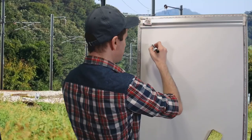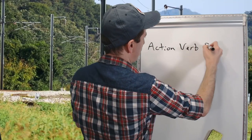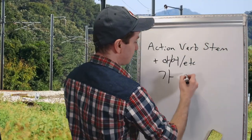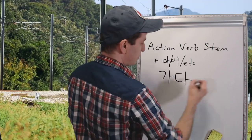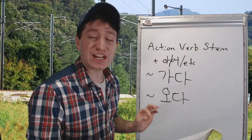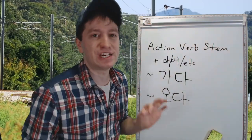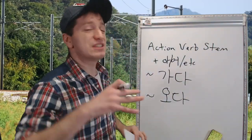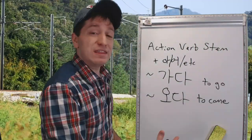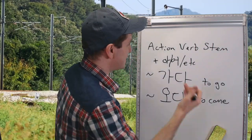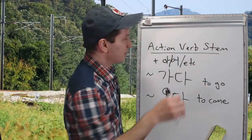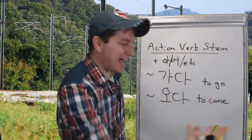The form we're going to be learning about: you take an action verb stem and conjugate it as if you're going to get the 요 form. Then you attach either 가다, to go, or 오다, to come. What this does is show the direction of a motion verb — it shows the direction that an action verb happens. This form literally means to do the action verb and then to go, or to do the action verb and then to come here.